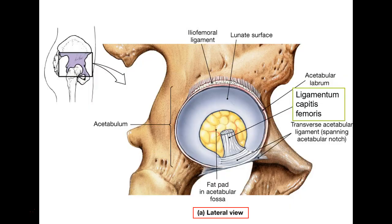Inside the hip joint there's a small ligament called the ligamentum capitis femoris — your book may call it 'ligament for head of femur.' Deep in the acetabular fossa there's a little fat pad; if you fall and land on the side of your femur, driving the head medially, that fat pad cushions the impact.